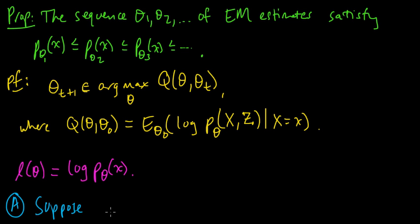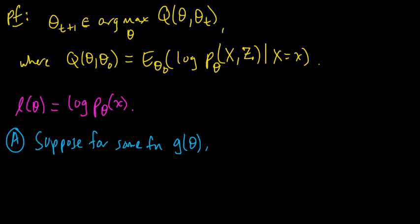And we're going to suppose that there exists some function, some function g of theta. Let's call it, because I'm going to use theta, well, I'll just call it g of theta. Some function g of theta, make a little space here. Suppose this works for some function g. We have the following two properties.